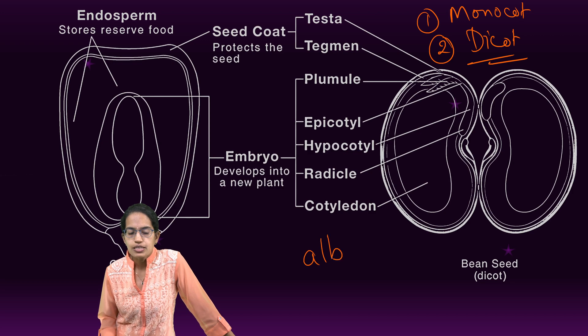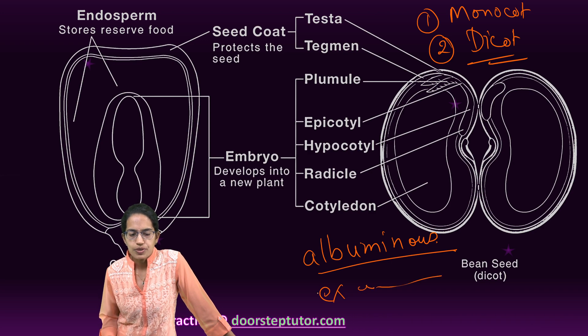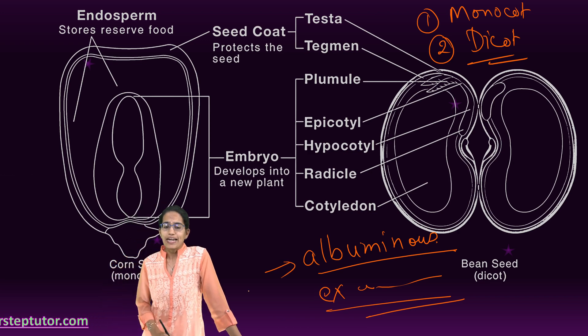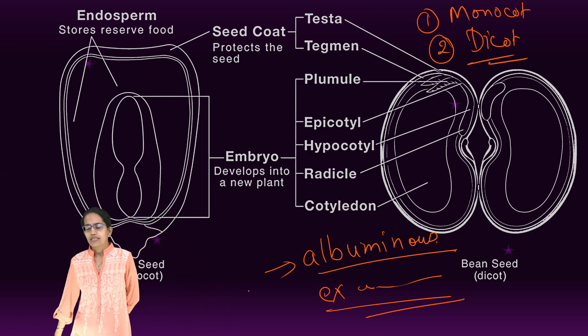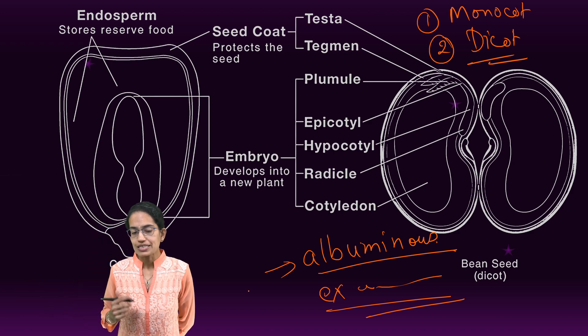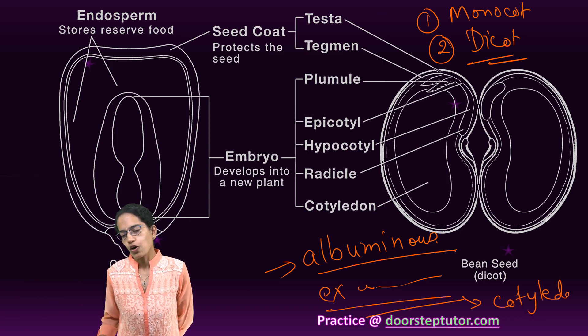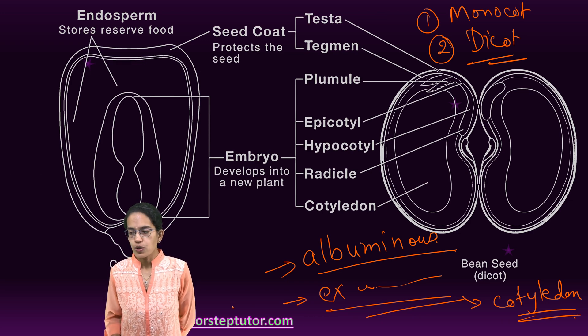The next is based on the presence or absence of endosperm. So if there is endosperm which is present, we call it as albuminous. It is called as exalbuminous if there is no endosperm which is present. When I say endosperm is present, it is known as albuminous. That means the food is stored in endosperm. If it is exalbuminous, food is stored in the cotyledon.